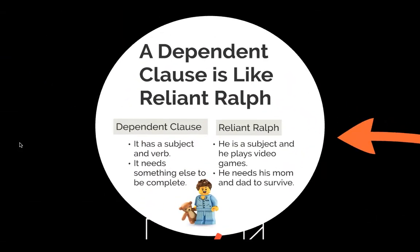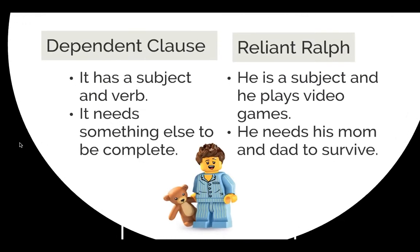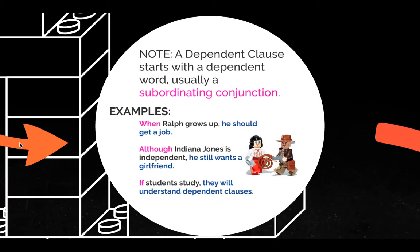A dependent clause is like Reliant Ralph. A dependent clause has a subject and a verb, but it needs something else to be complete — to be a complete sentence. So when you think of a dependent clause, it is not a sentence by itself; it needs something else. When we create a complex sentence, we use a dependent clause and an independent clause together. A dependent clause usually starts with a dependent word, like a subordinating conjunction.